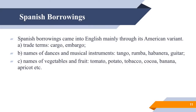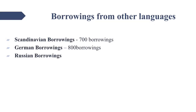Spanish borrowings were introduced into English mainly through its American variant. Here we have the following groups: trade terms such as 'cargo' and 'embargo', names of dances and musical instruments, and names of vegetables and fruit. By the end of the Old English period, English underwent a strong influence from Scandinavian due to the Scandinavian conquest of the British Isles — there are about 700 borrowings from Scandinavian into English. There are also some 800 words borrowed from German into English, including geographical terms such as 'cobalt', 'bismuth', 'zinc', and 'quartz'.